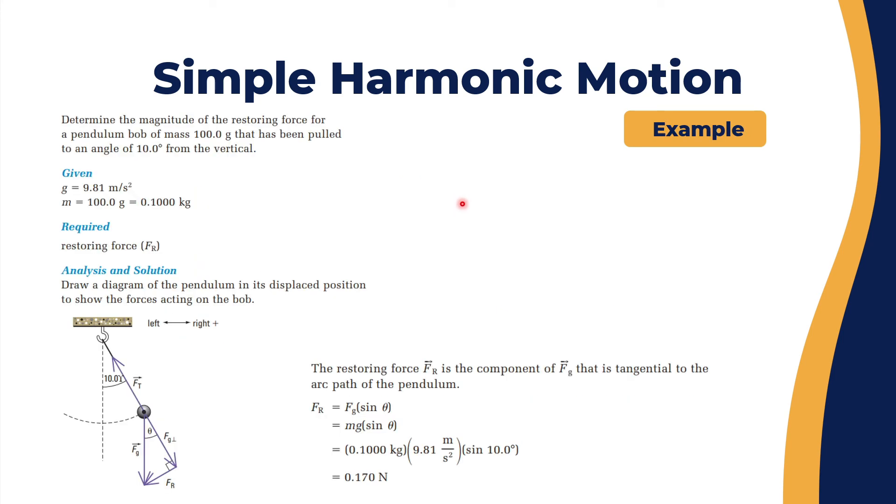Now let's take an example on a pendulum. Determine the magnitude of the restoring force of a pendulum with a mass of 100 grams that has been pulled to an angle of 10 degrees from the vertical. You have g and you have the mass. Convert grams to kilograms: 0.1 kilogram. Find the restoring force F_R.